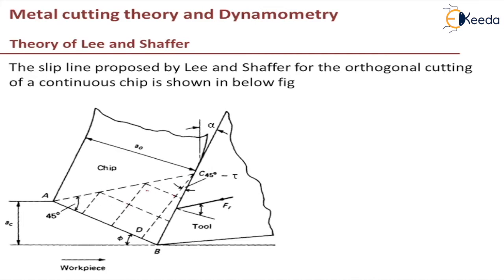There will be a transmission of forces, and this transmission of forces results in a triangular plastic zone A, B, C — from A to B, B to C, and C to A. This is the triangular plastic zone where no deformation occurs but the material is stressed to its yield point. Throughout this zone, the maximum shear stress will be τ_s.